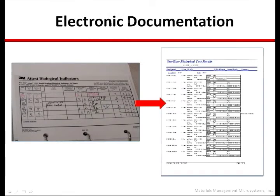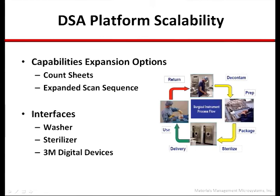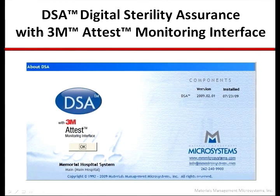DSA delivers the benefits of electronic documentation and auto-reader integration with compliant, paperless documentation, immediate and robust recall facilitation, and error reduction and labor savings over manual systems. In addition to the exclusive high-value capability set, DSA provides a scalable platform that grows with the client. Options include count sheet data, instrument images, and training video clips for building accurate and complete sets; an expanded scan sequence to include decontam to facilitate proper cleaning of all devices and to increase technician accountability; and interfaces with washers, sterilizers, and other 3M digital devices for improved data flow and compliant documentation. DSA — the exclusive capability for strict discipline of the BI monitoring process and for automation of sterility assurance documentation. Only from microsystems.